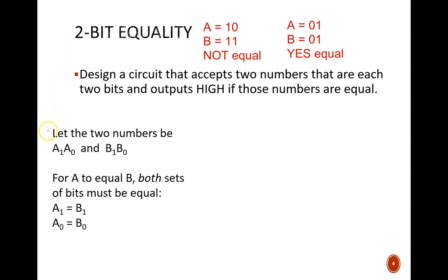Let's define the numbers as A and B using the subscript notation. For the overall numbers to be equivalent, then each corresponding bit must be equivalent. A1 must equal B1 and A0 must equal B0. This leads to this simple circuit.